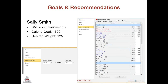Based on Sally's personal information, the Food Processor can calculate her BMI, or body mass index, as well as her calorie and nutrient needs. Sally's BMI is 29, which puts her in the overweight category, so weight loss could be recommended. The Food Processor allows the user to enter a desired weight goal and rate of weight loss. Based on Sally's profile information, the goal weight of about 125 pounds would put Sally in the middle of the normal weight category. The goal weight can be adjusted at any time if needed.